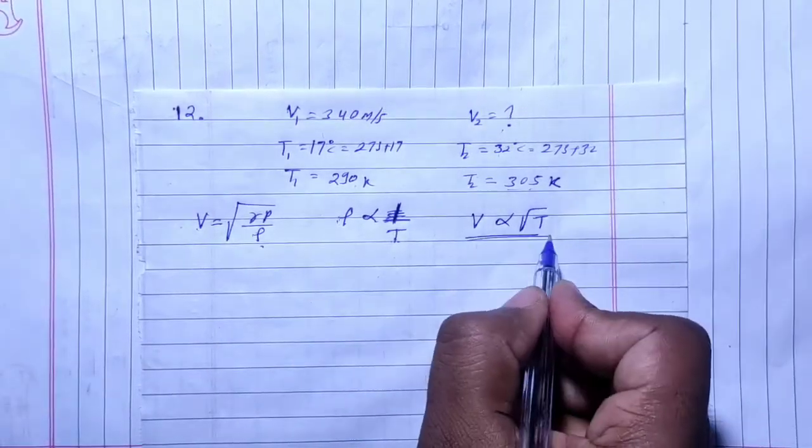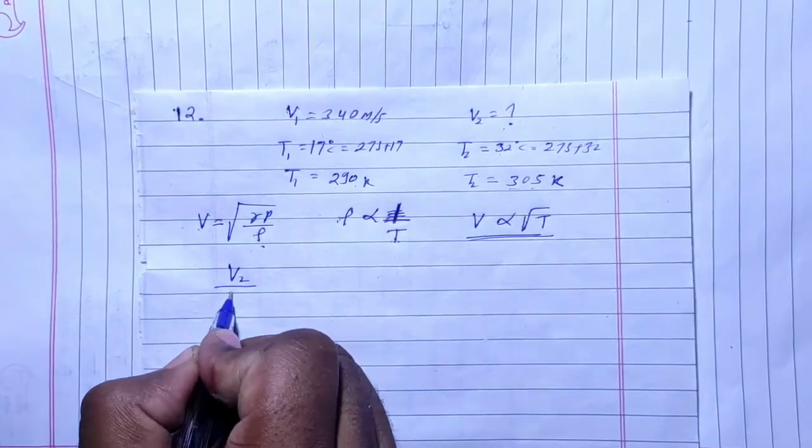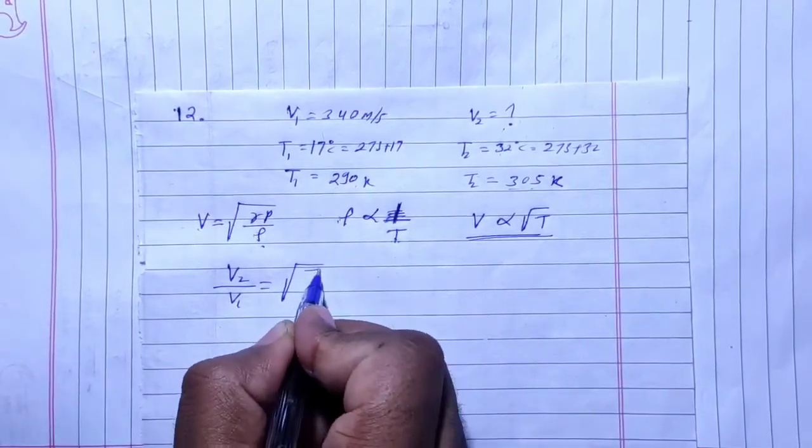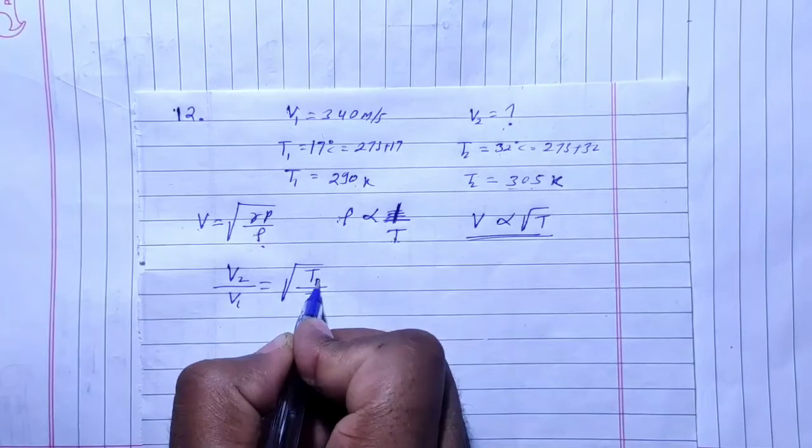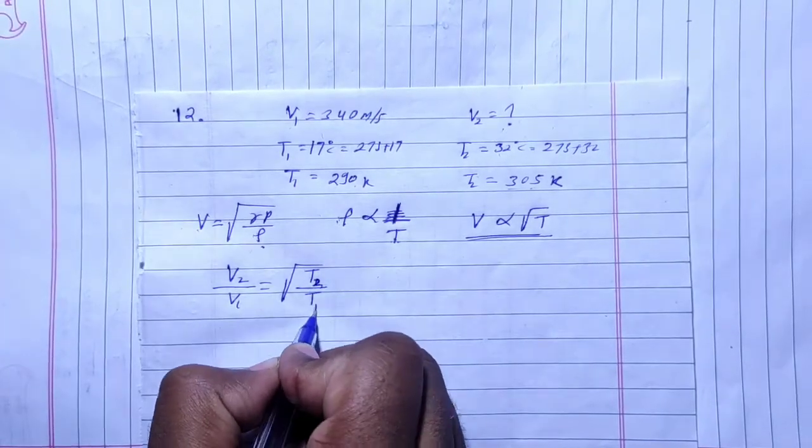So the velocity and temperature are related. Now, if V2 by V1 is related, then V2 by V1 equals the square root of T2 by T1. Is it right?